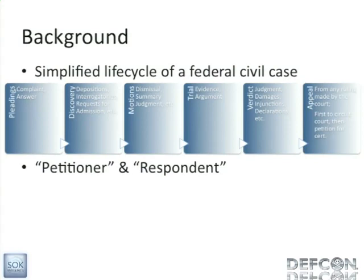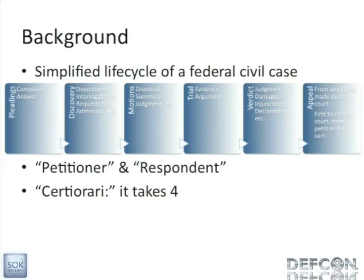In federal court, you'll have your trial at the district court level, you're going to appeal to the circuit court level. Then whoever doesn't like what the circuit court did, they can appeal it and try to get it into the Supreme Court. This is called a petition for certiorari. Certiorari is the writ that the Supreme Court issues saying they're taking the case, and it takes four justices to agree. The Supreme Court gets a gazillion petitions a year and they're going to select about 80 or so to hear.